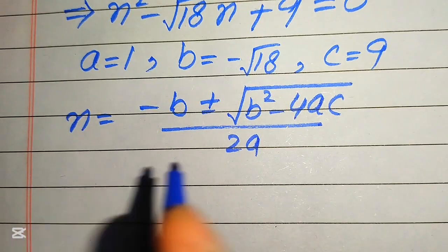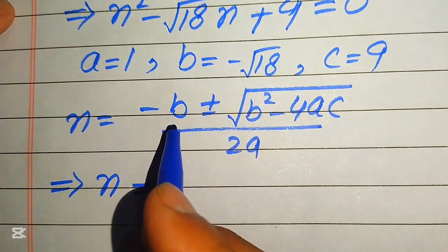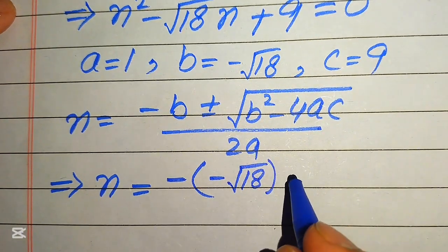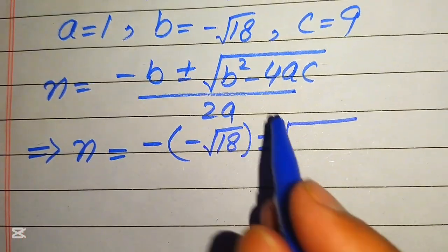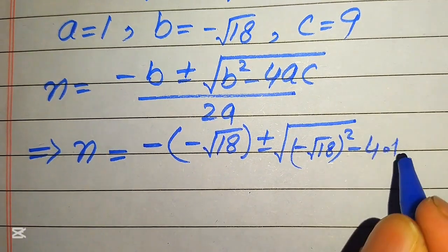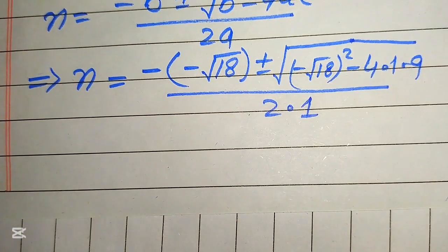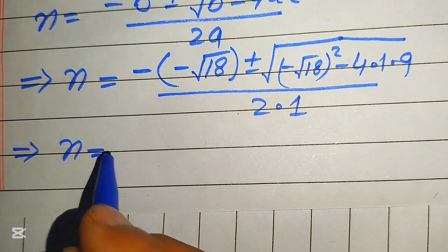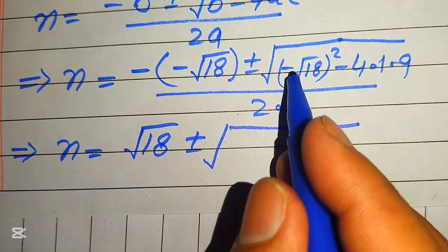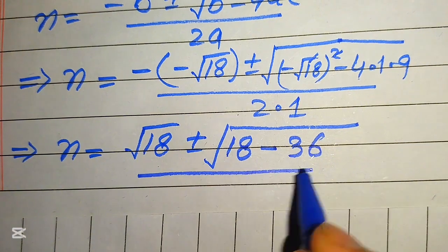Substituting the values of a, b, and c: n = −(−√18) ± √((−√18)² − 4·1·9) all divided by 2·1. The negative of negative gives +√18. The term (−√18)² becomes +18, and 4·1·9 = 36, so the discriminant is 18 − 36 = −18. This gives n = (√18 ± √(−18)) / 2.